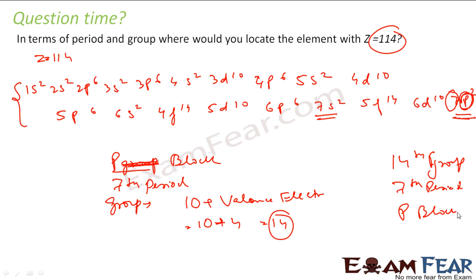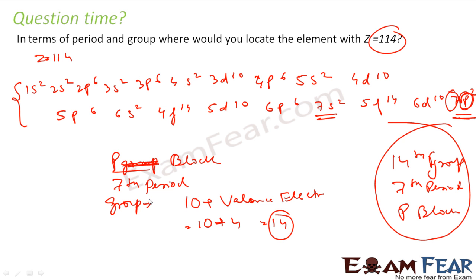So this is the answer. Just by the electronic configuration I can tell which group an element belongs to — element Z=114 is in the 7th period, 14th group.